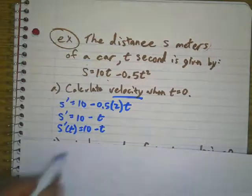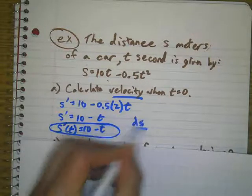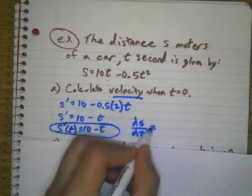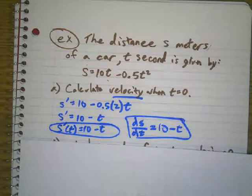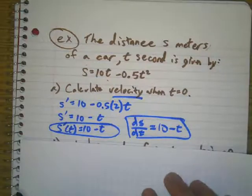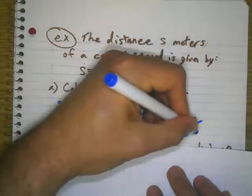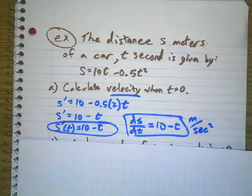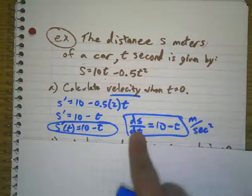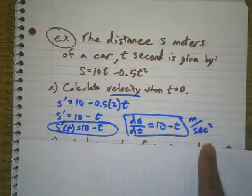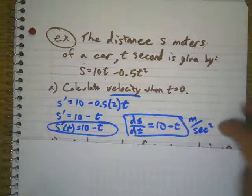Another way to have written this would have been ds/dt equals 10 minus t. That would have been another way to write it. Now, in IB, they'll want you to write the units. And the units for this is meters per second squared, because this function is meters per t seconds. So the derivative is meters per second squared. Velocity is meters per second squared, or the distance per the time squared.